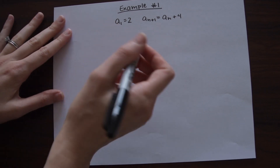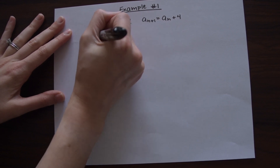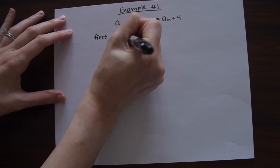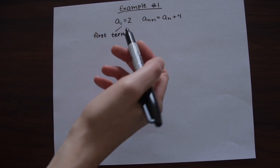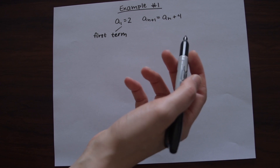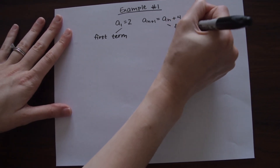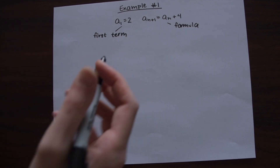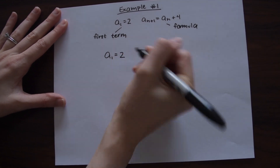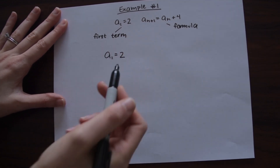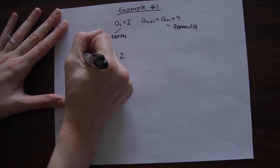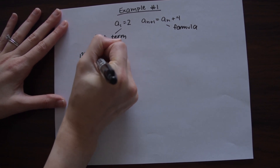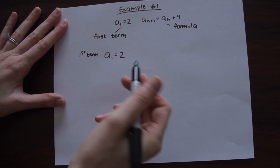Let's break down what each part of this formula means. The first part — a sub one equals two — represents the first term. There's always going to be an a sub one given to us, and it's always going to be the first term. So we have two as our first term in this sequence. The next part is the formula we'll use to find each subsequent term.